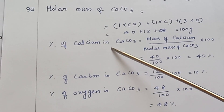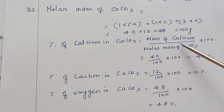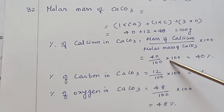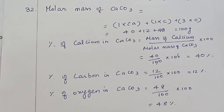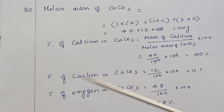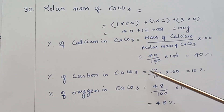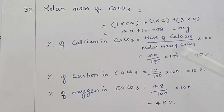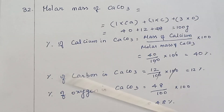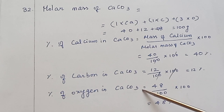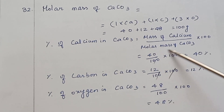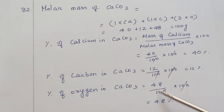Molar mass of calcium carbonate is 100 grams. Percentage of calcium = (40/100) × 100 = 40%. Percentage of carbon = (12/100) × 100 = 12%. Percentage of oxygen = (48/100) × 100 = 48%.